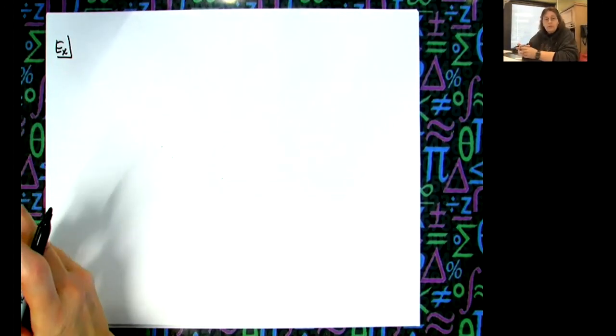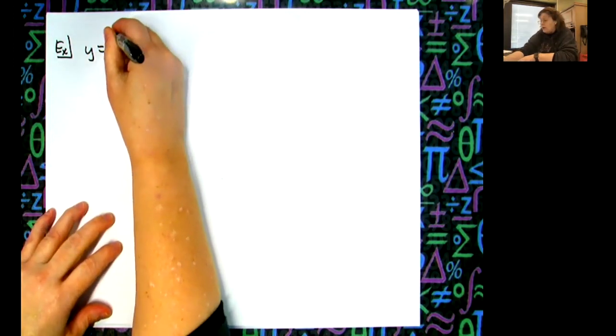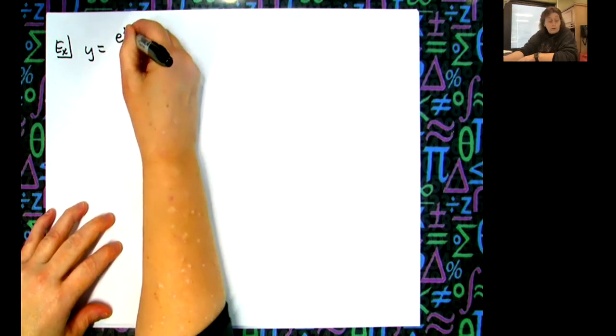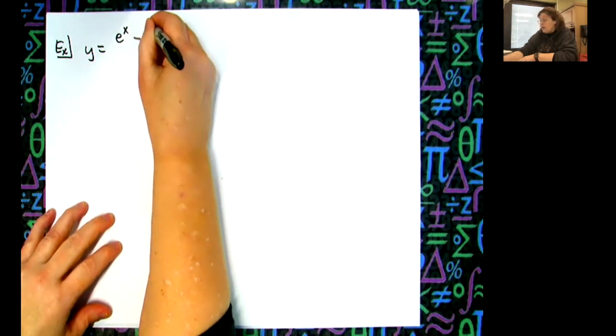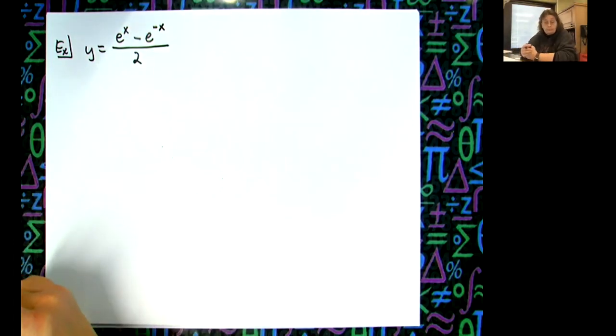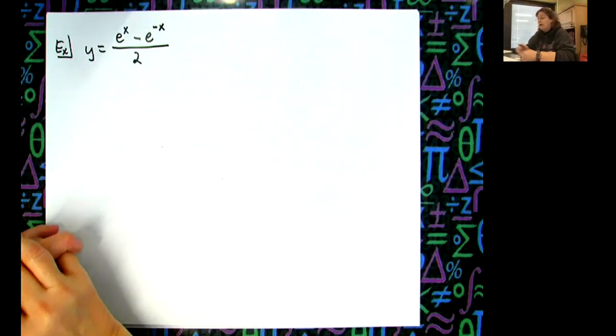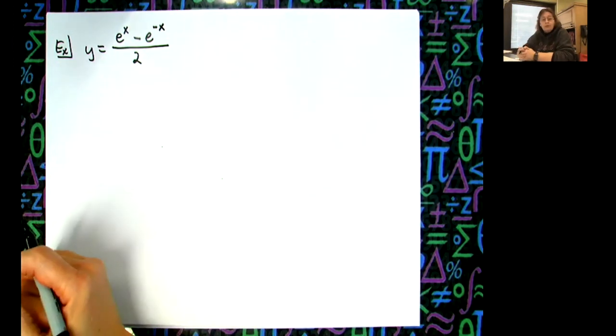Always try to look for something that's going to make your life easier. What if I have y equals e to the x minus e to the negative x all over 2? What I don't want you guys to do is automatically go 'oh that's a quotient, I'm going to do quotient rule.'